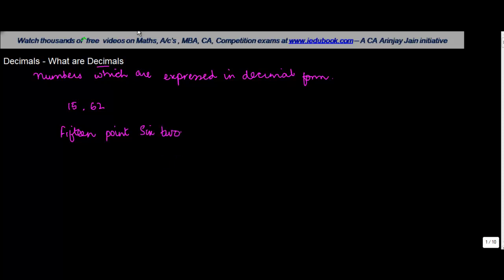Two, right. So there is the part before this point, which is known as the decimal point. Okay, this part before the decimal point is a whole number, right?